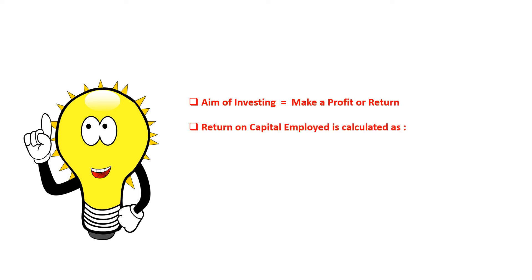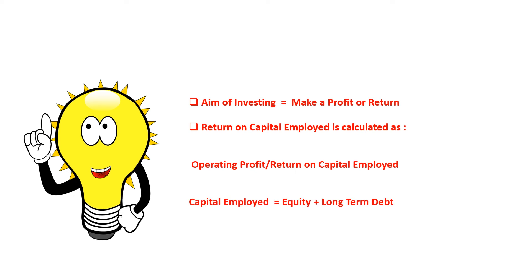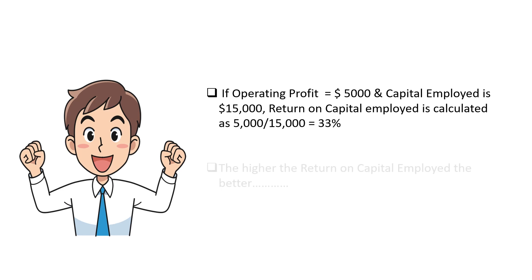The aim of investing is surely to make a profit or a return. Return on Capital Employed is calculated as follows: operating profit — sometimes known as profit before interest and tax — divided by capital employed. Since we're looking at the longer term, capital employed is equal to equity plus long-term debt.